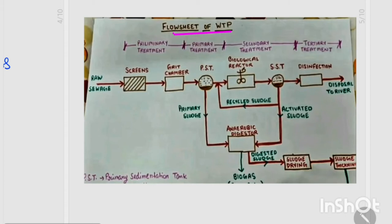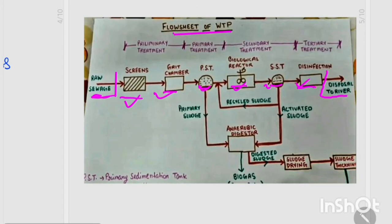I have told you how raw sewage enters this treatment plant, and finally all of the processes lead to disposal in the river. Whatever processes or units we have used, I have shown in this diagram. I also explained which units remove what from the sewage. The treatment stages are preliminary, primary, secondary, and tertiary. This is your flow sheet.